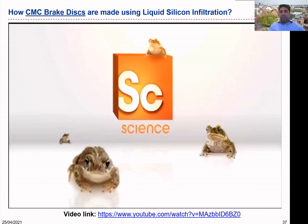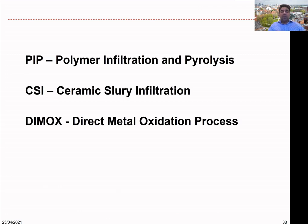In the lecture slides, there are several other processes to manufacture ceramic matrix composites, including PIP (polymer infiltration and pyrolysis), CSI (ceramic solid infiltration), and DMOX (direct metal oxidation processes). Most of these processes involve several stages — please study them based on the content provided and read around to expand your knowledge. We are also going to look at the sintering process, which is one of the most important processes used during manufacturing of ceramic components and ceramic matrix composite components. Whatever process is used with ceramic material, sintering is a really important process to control and minimize the porosity of the structures.